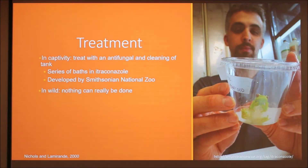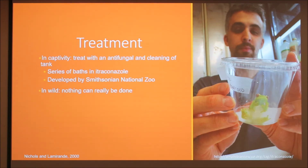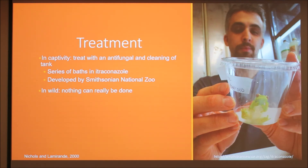You can take a skin sample and try to see this under a microscope to diagnose, but it's really invasive, so usually we just run PCR. One thing we can do to treat this is if you have a pet frog and notice these symptoms, you can treat with an antifungal and really clean out the tank — probably throw away everything in there, get new stuff, clean it with bleach. There's an antifungal bath series that actually kills the fungus, but in the wild we really can't do anything because you can't ensure that dumping antifungal isn't going to kill other species.